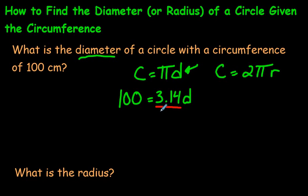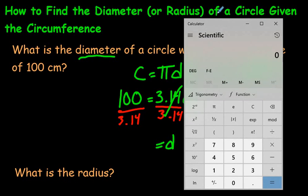So divide both sides by 3.14. And when you do that, it's going to get D all by itself because this divided by this is just one. D is left all by itself. And a hundred divided by 3.14 will be the answer that we're looking for.